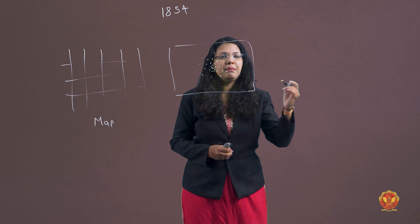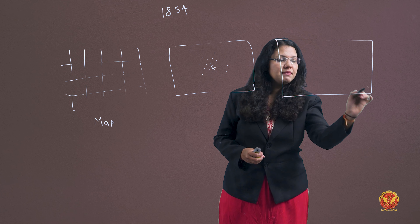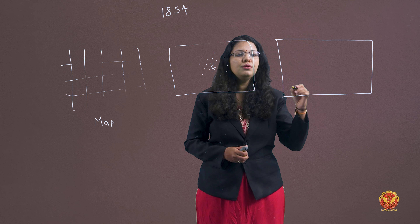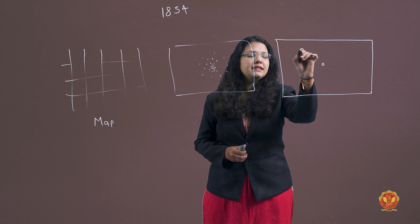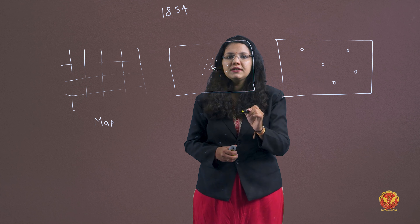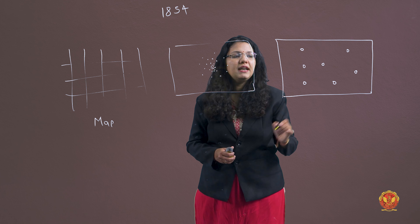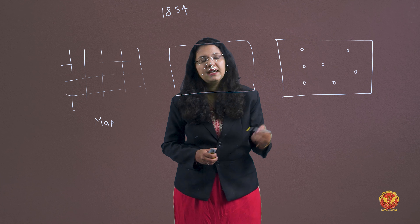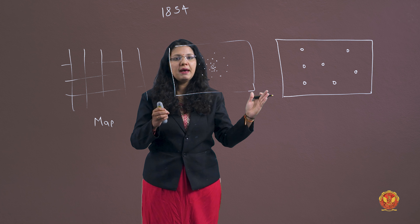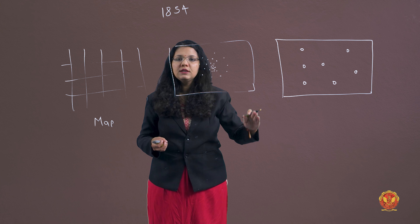Then there was one more map. They looked at the location of the water pumps and located them on the map. They didn't have a large circle, but a big circle was used to indicate where the water pumps were located. So they took three types of maps and overlapped all three of them.